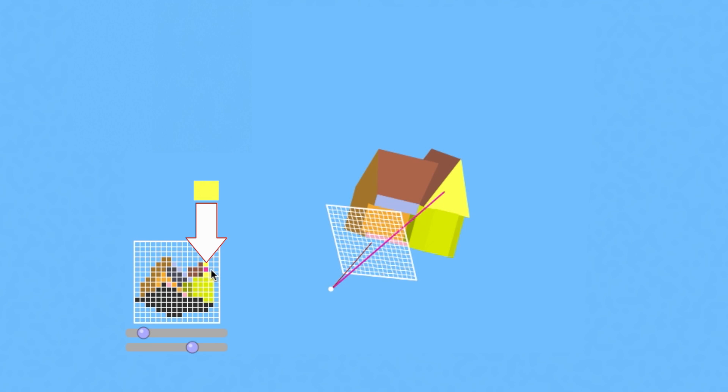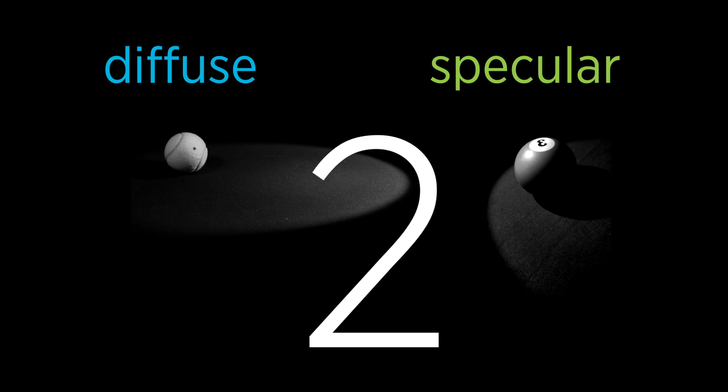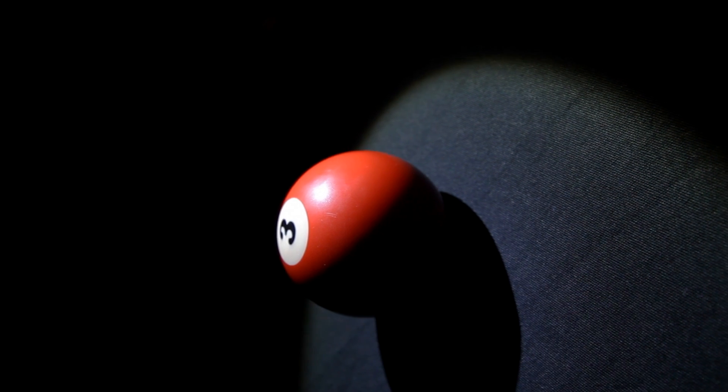In the previous video, we talked about what color a point on a surface is by considering three factors. One, how much light falls on the point. Two, how the surface reflects light, and three, where the camera is.